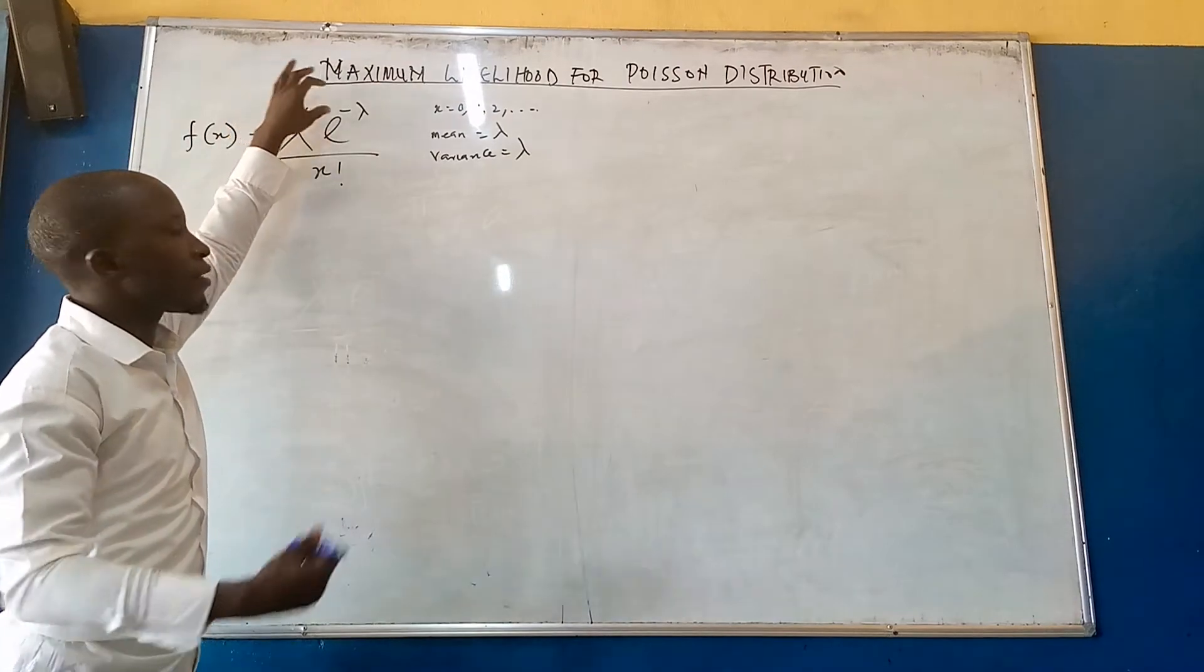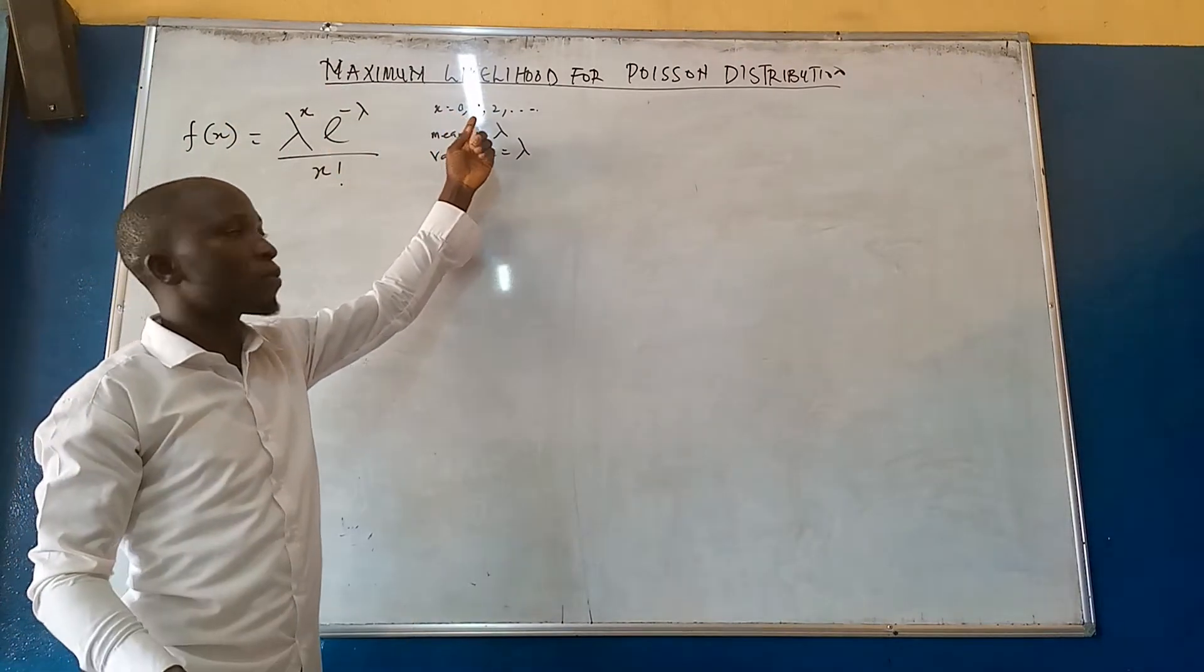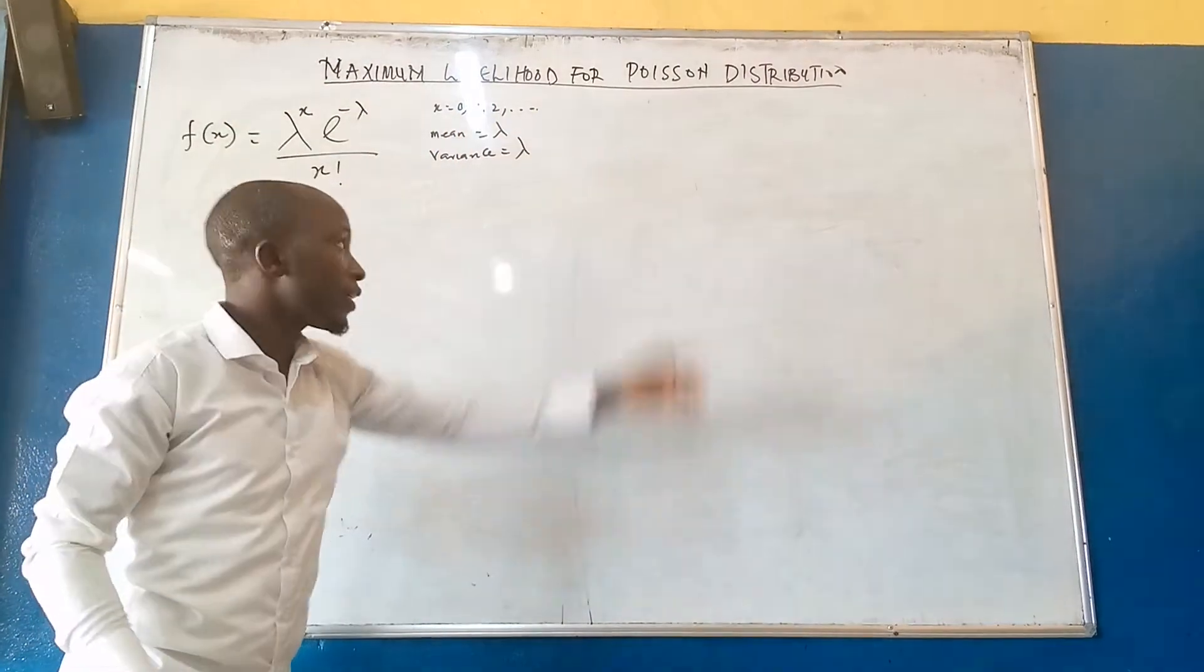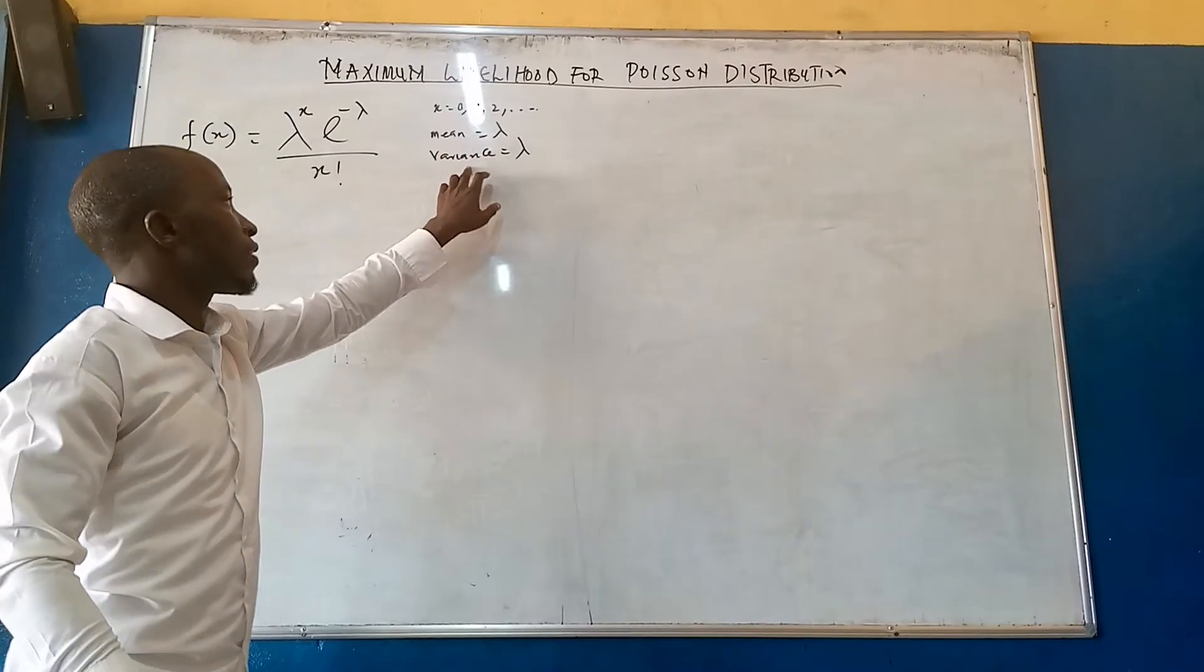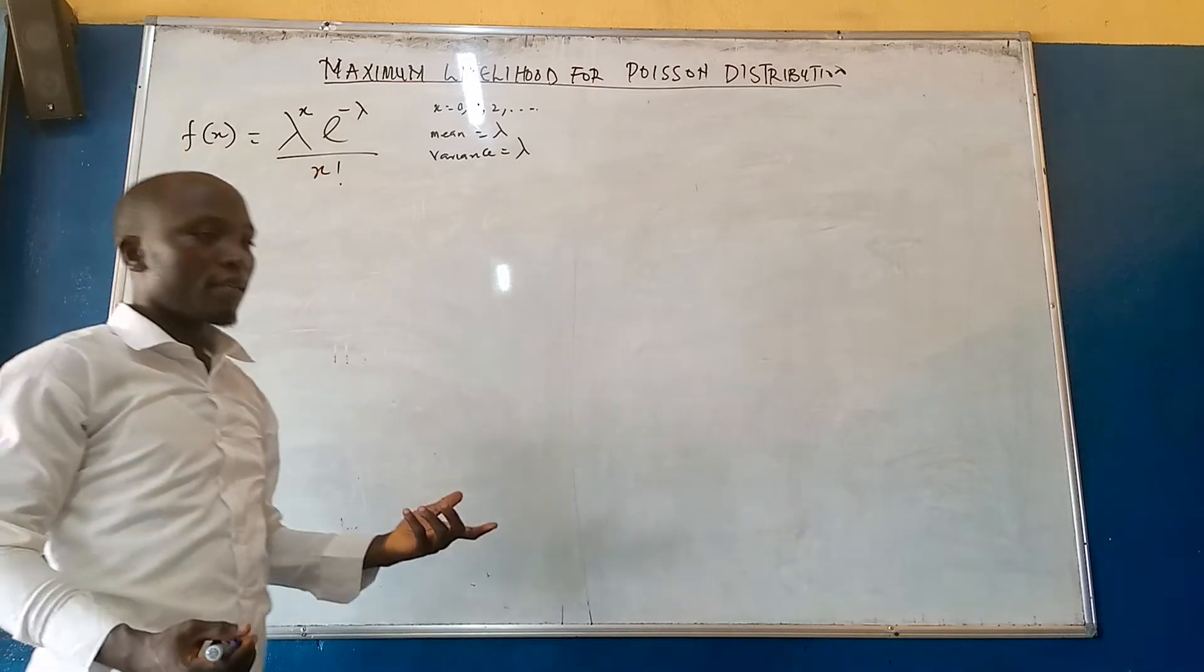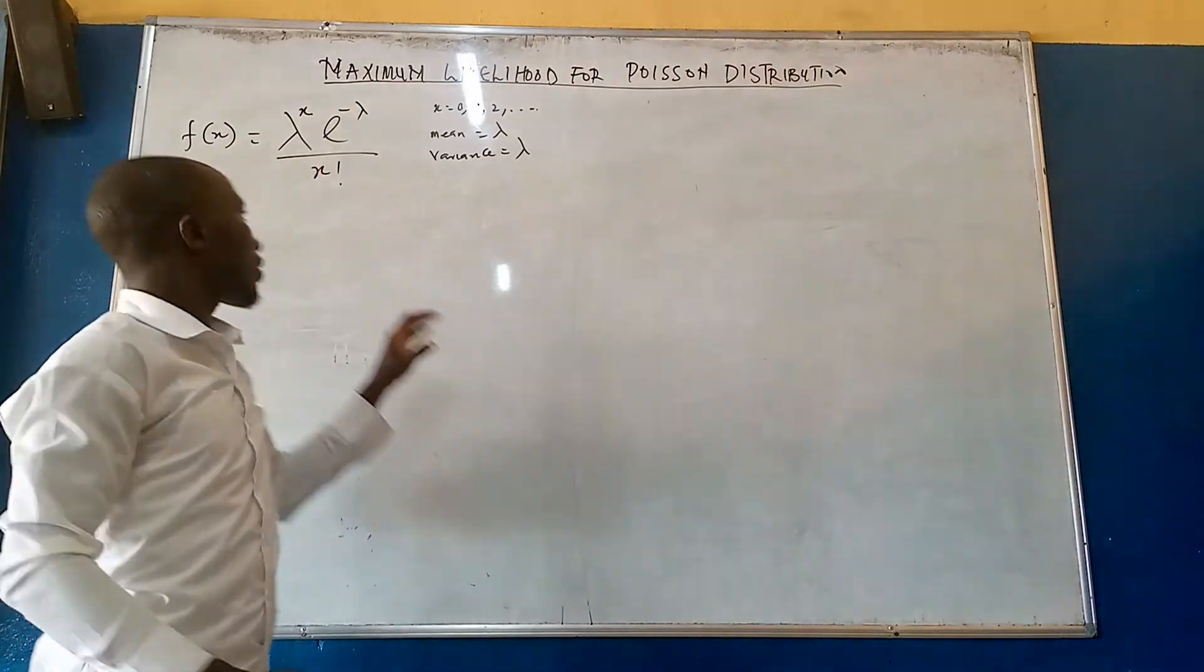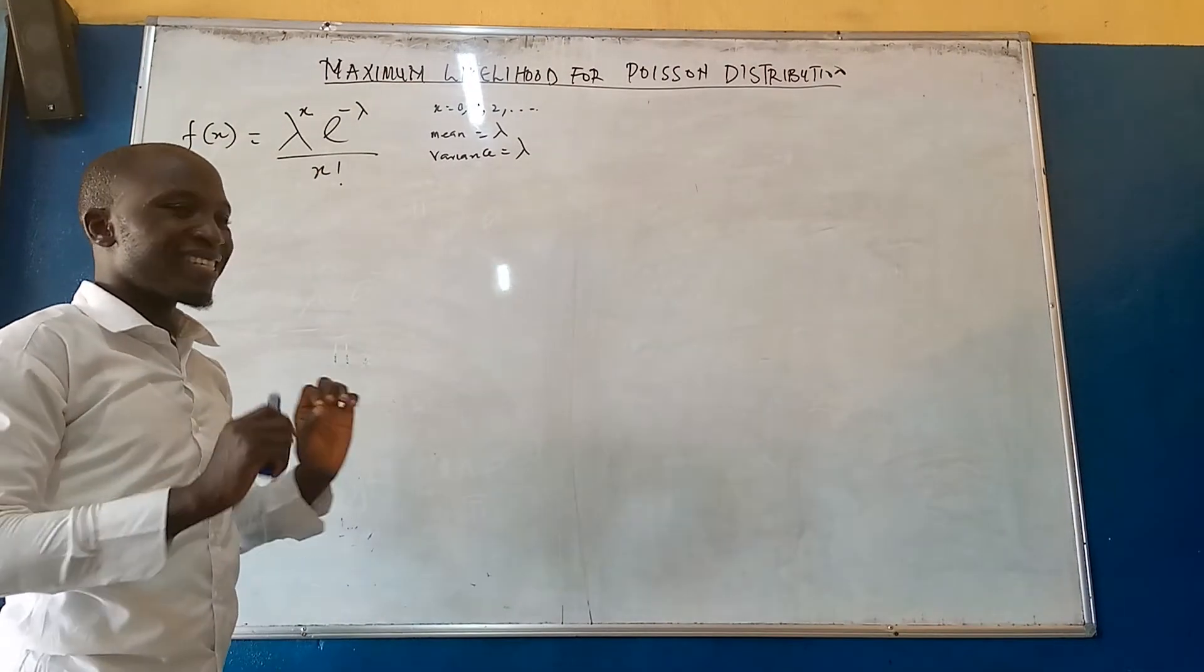Where x is a random variable which will run from 0, 1, 2, 3, and so on. The mean of the distribution is lambda, and the variance of the distribution is lambda. In summary, the parameter of the distribution is lambda.